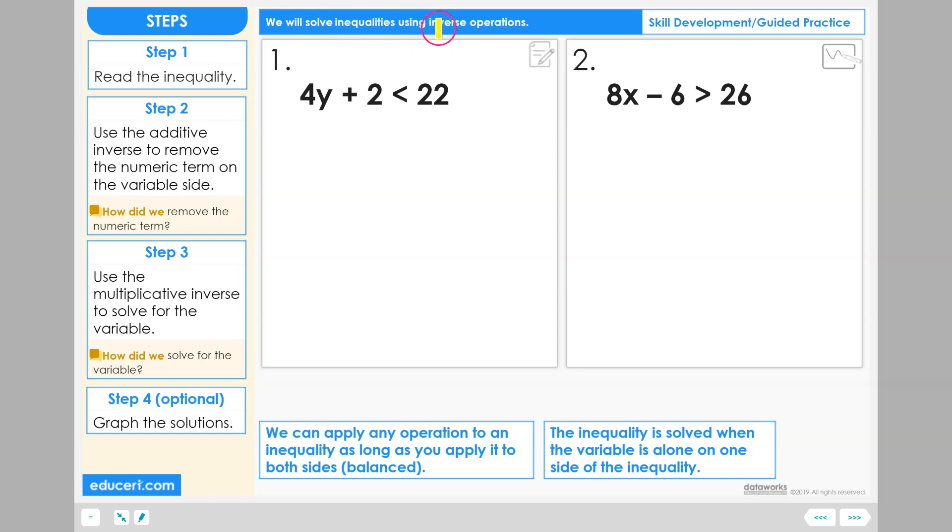Let's solve inequalities using inverse operations. Inequality number 1, Step 1. Read the inequality: 4 times y plus 2 is less than 22.